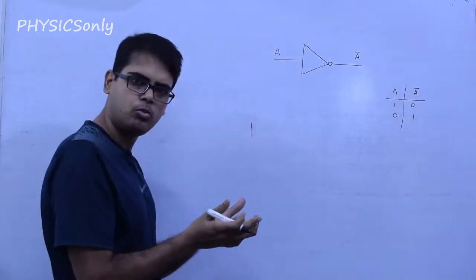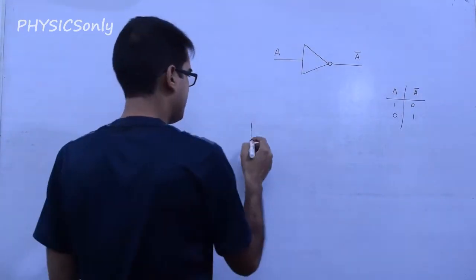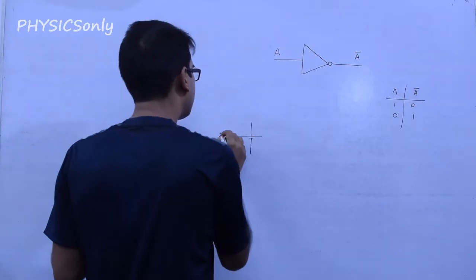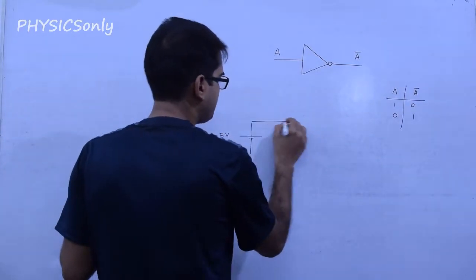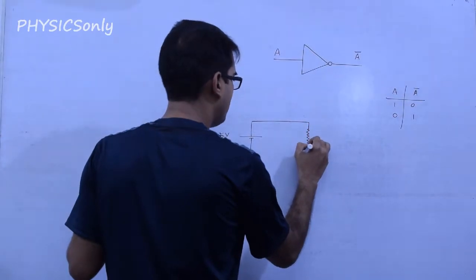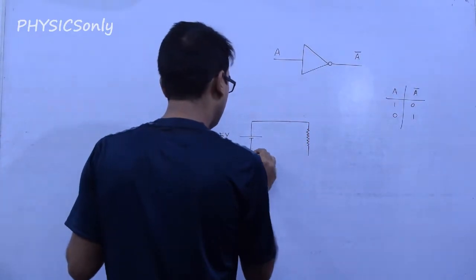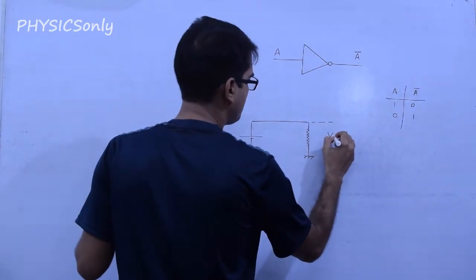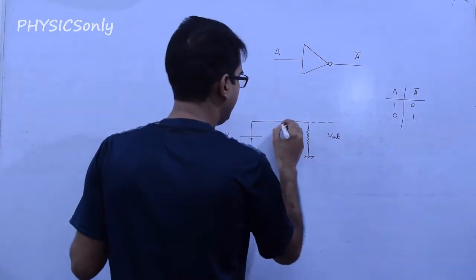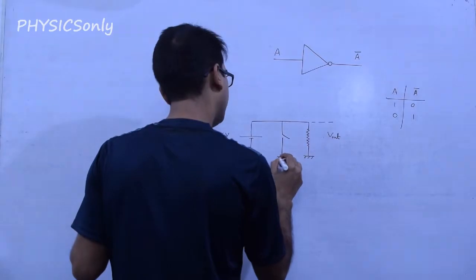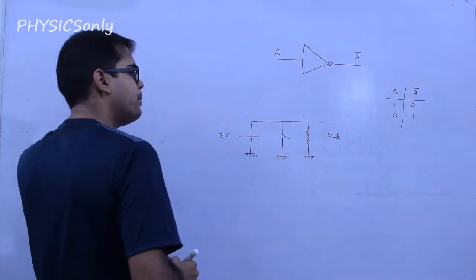First we have to use this switch with the transistor. So we have 5 volts. We have to use this resistance. And we have to measure this output. We are going to keep this switch in a particular state.